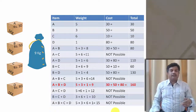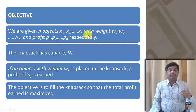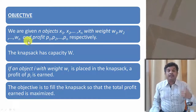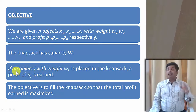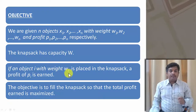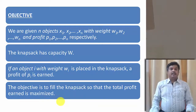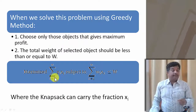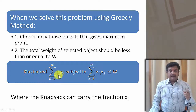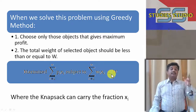Let us define the objective. We have n objects x1, x2, ..., xn, each having respective weights w1, w2, ..., wn and respective profits p1, p2, ..., pn. Item xi has weight wi and gives profit pi, and the capacity of the knapsack is W. The objective is to maximize your profit — mathematically, maximize the summation of pi*xi with the constraint that the summation of wi*xi should be less than or equal to the size of the knapsack W.